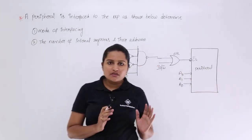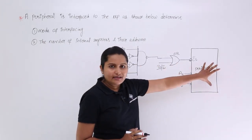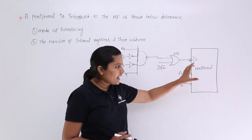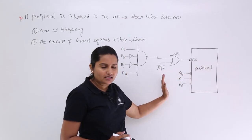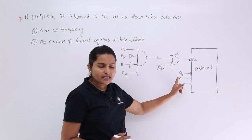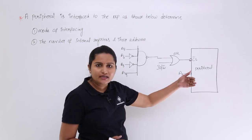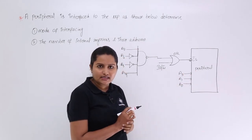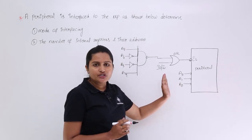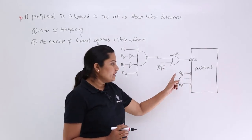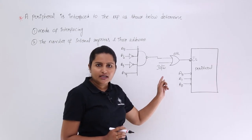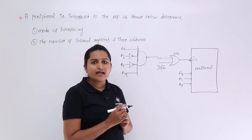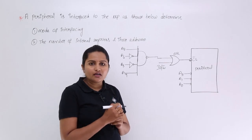If you observe this interfacing, the peripheral is interfaced to the microprocessor and here we have a chip select to select this peripheral. This peripheral has internal address lines A3, A1, and A0, which decide how many registers we are going to use. With three address lines, we have 8 combinations from 0 to 7, giving us a total of 8 registers, R0 to R7.